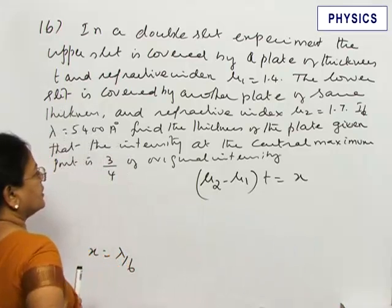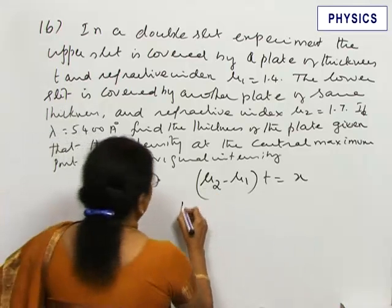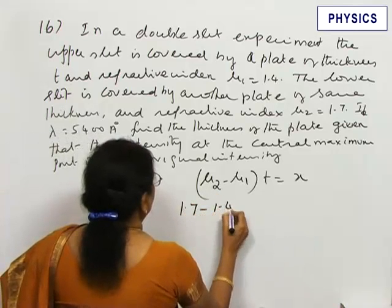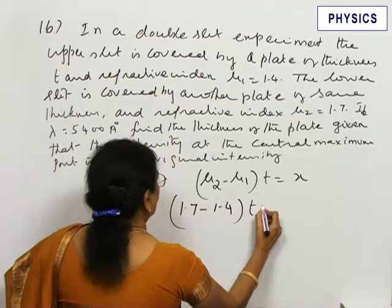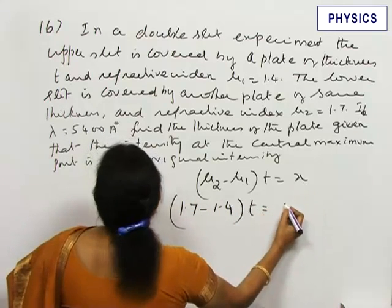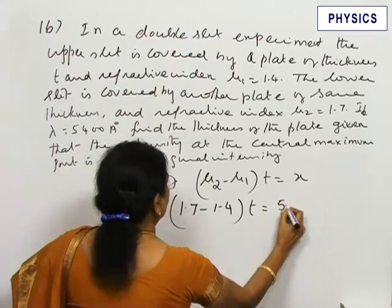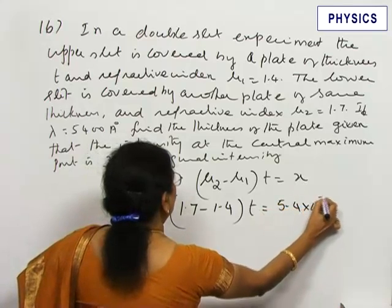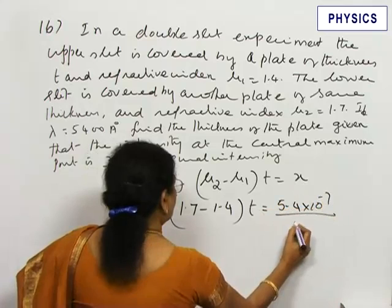Let us now substitute here. μ₂ is 1.7, μ₁ is 1.4, we have to calculate x = λ/6. What is λ? 5400 angstrom or 5.4 × 10⁻⁷ meter divided by 6.